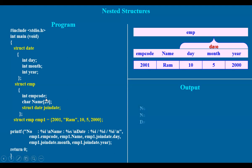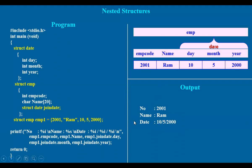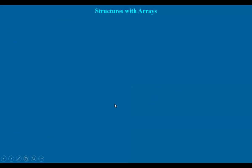If you compile and execute the data, this is the output data. This shows the first three fields. This is the structure and this is the data. So this is the nested structure. Now the structure within the structure — let's show you more examples.